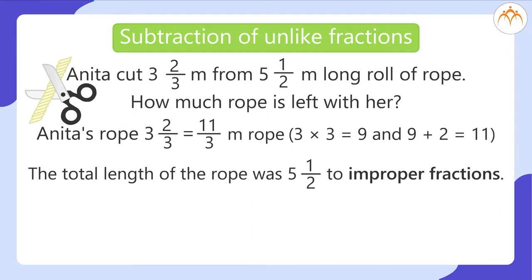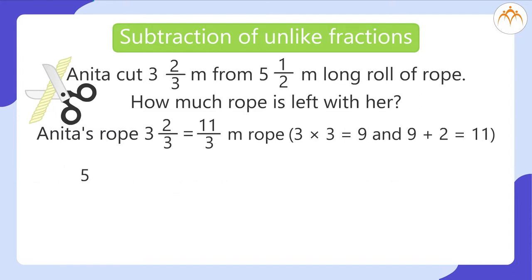The total length of the rope was 5 and 1 half to improper fractions. 5 and 1 half is equal to 11 by 2, the total length of the rope. 5 multiplied by 2 is equal to 10 and 10 plus 1 is equal to 11.